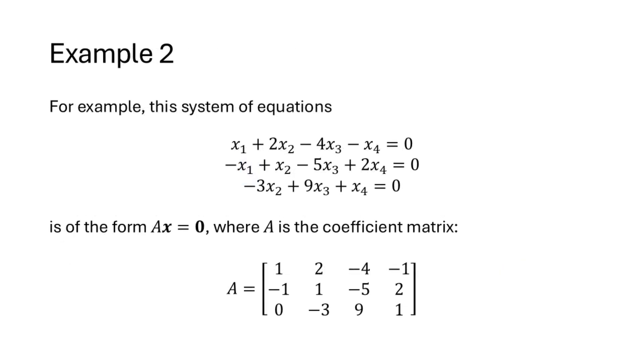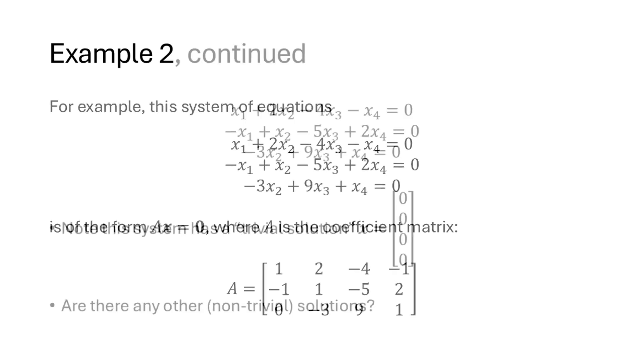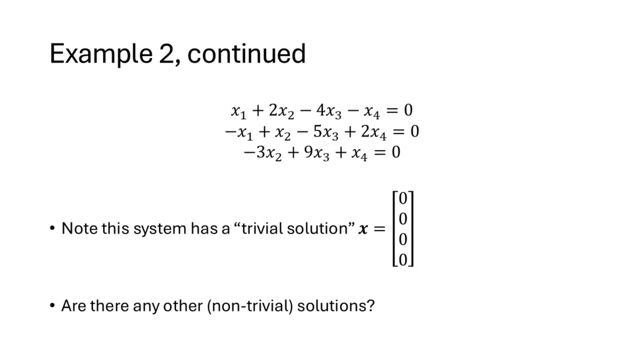Consider this example. We have a system of equations with 3 equations and 4 variables. So this equation has the form Ax equals 0 where A is the coefficient matrix. Now you might notice that there's one trivial solution, which is to set all of the x's equal to 0. Because the right-hand sides of these equations are all 0, if we put 0 in for every x variable, certainly the left-hand side would equal the right-hand side. But we might wonder whether there are any other non-trivial solutions.